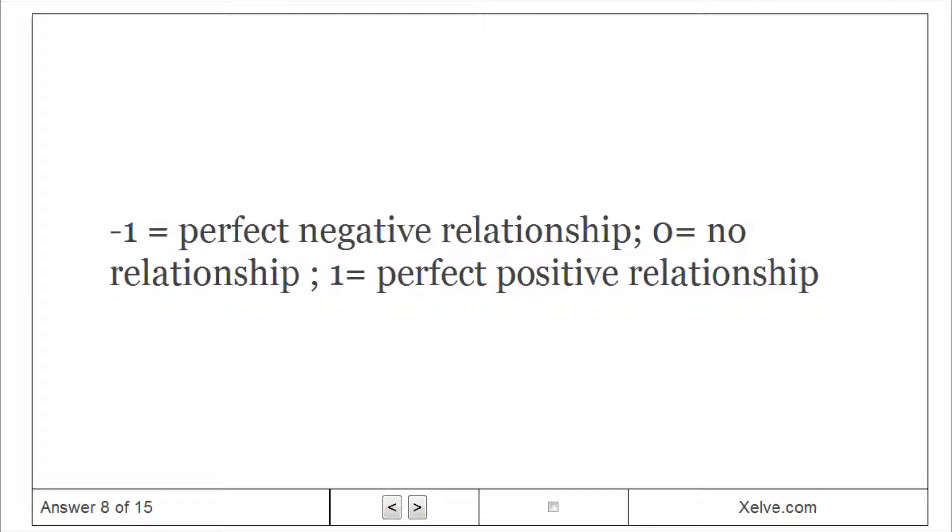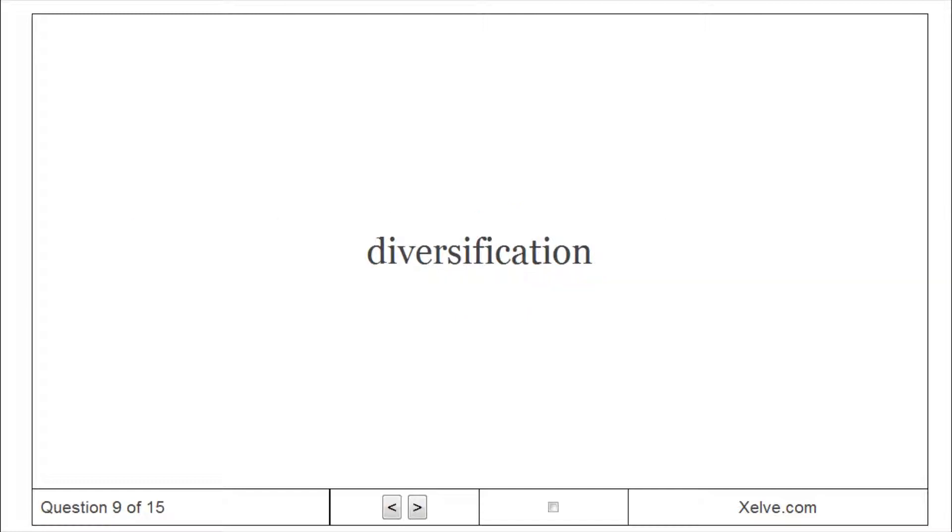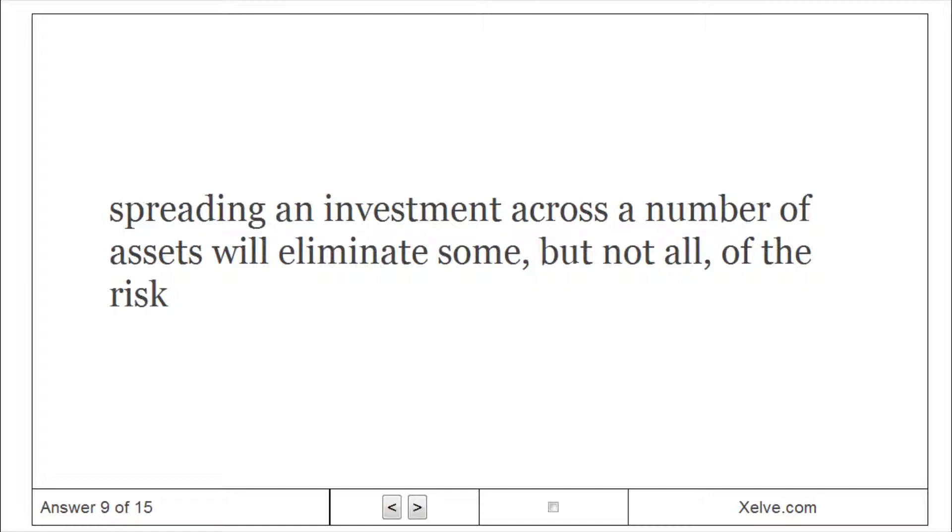Minus one equals perfect negative relationship, zero equals no relationship, one equals perfect positive relationship. Diversification: spreading an investment across a number of assets will eliminate some, but not all, of the risk.